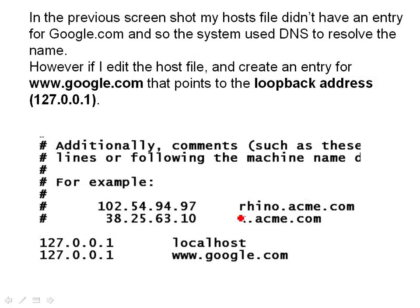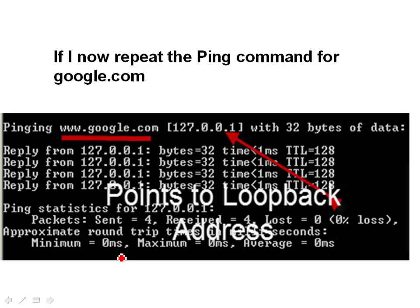Now let me add an entry to the host file — there's the entry here — and I'm just going to make it point to the loopback address, and let's do the ping again. And you can see now the ping — I'm pinging Google again — and this time it's resolved it to the loopback address by using the host file. And again, the ping worked.